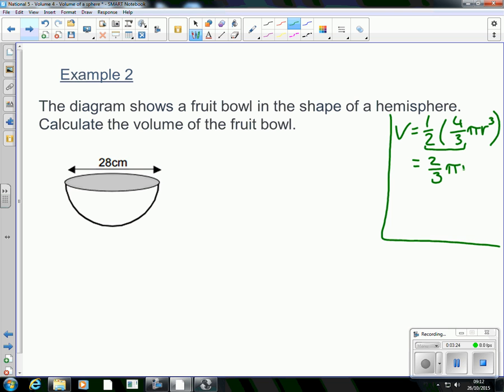So to get the volume of a hemisphere, you can do it the long way. Calculate the volume of the whole sphere and then half it at the end. Or what you can do is just half that 4 thirds. Half of 4 is 2. So this is going to be 2 thirds pi r cubed. So the volume for this is 2 thirds pi r cubed.